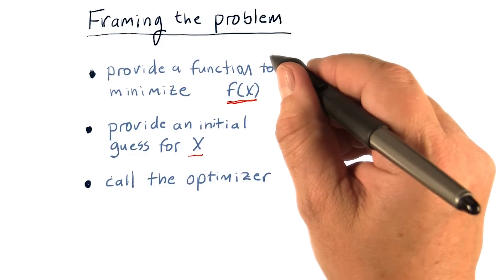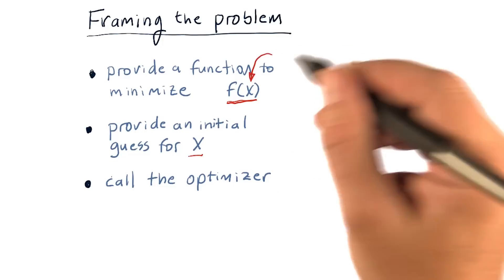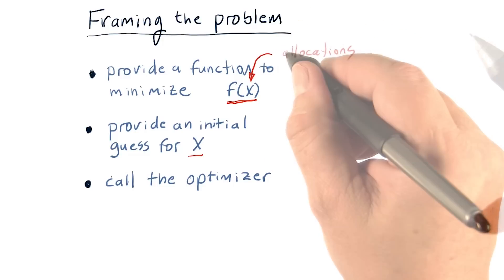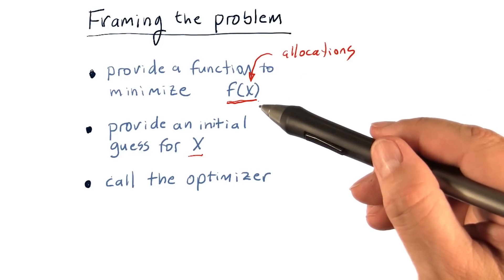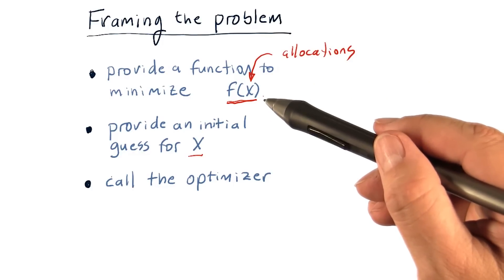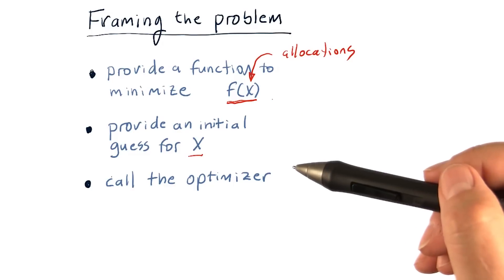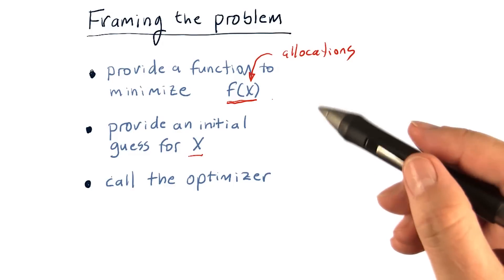Now, in this case, x are the allocations that we're looking for. And we want the optimizer to try different allocations in order to discover the best set of allocations that optimizes this function. Well, what is that function exactly?